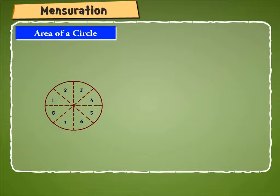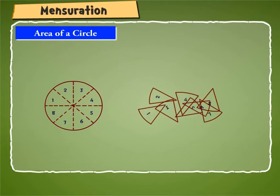Divide it into 8 equal parts by drawing 4 diameters as shown in the on-screen figure. Now you have got 8 sectors. Cut out these 8 sectors.